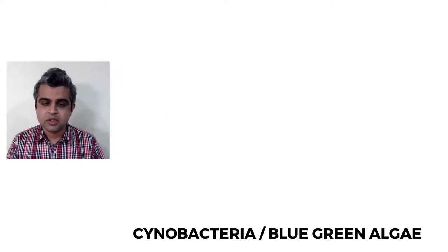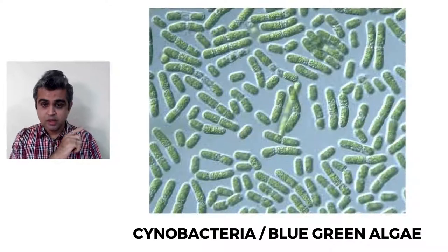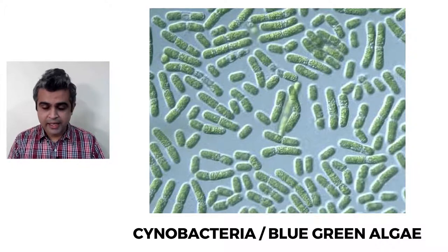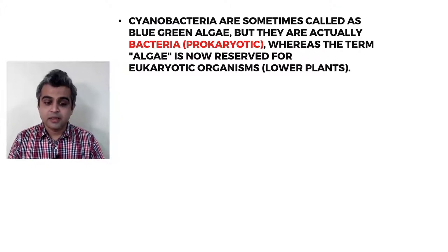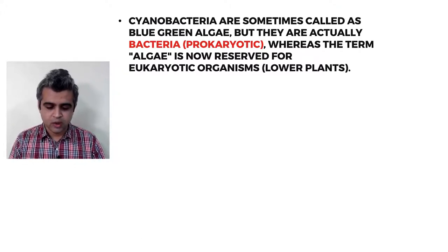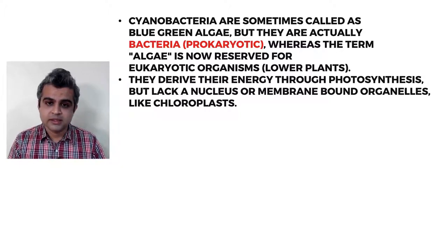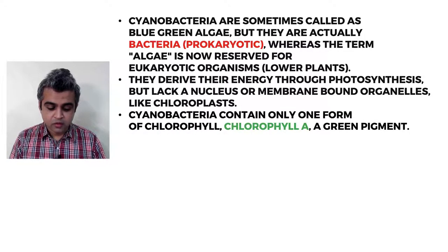Cyanobacteria, also called blue-green algae, is a misnomer — they are single-celled prokaryotes. Algae are single-celled but eukaryotic and classified under plants. Cyanobacteria are actually bacteria and prokaryotic. They derive energy through photosynthesis but lack a nucleus or membrane-bound organelles. They contain only one form of chlorophyll — chlorophyll a — and do not have the other chlorophylls found in higher plants.